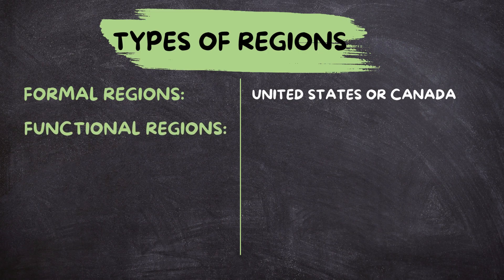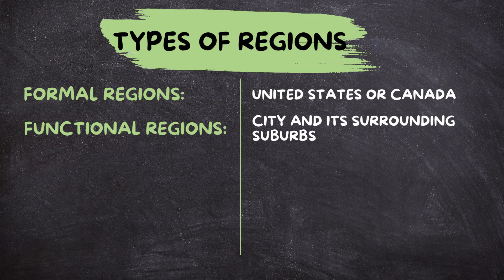Functional regions: these regions are organized around a focal point or central hub and are defined by the connections and interactions between places. A good example is a city and its surrounding suburbs. The city serves as the central hub, providing services and resources to the surrounding areas.